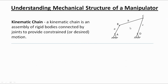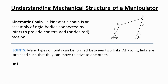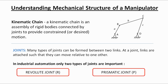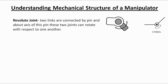Let us understand the second part of the manipulator structure, that is the joints. Many types of joints can be formed between the two links. At a joint, links are attached such that they can move relative to one another. In industrial automation, only two types of joints are important: the revolute joint and the prismatic joint. In a revolute joint, two links are connected by a pin, and about the axis of this pin these two links can rotate with respect to one another, as shown in the diagram.